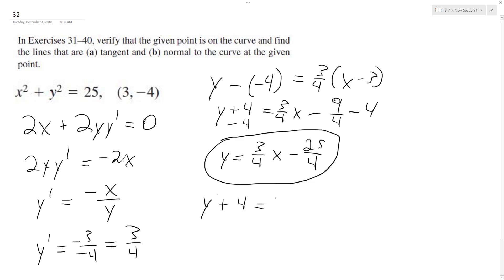So y plus 4 equals, except instead of 3 fourths for the slope, we do the reciprocal times -1, so -4 thirds times x minus 3. And that just works out nice because we get y equals -4 over 3x, plus -4 thirds times -3 ends up being positive 4, and then we subtract 4, so we just end up with y equals -4 over 3x, and that's it.